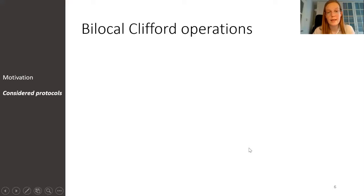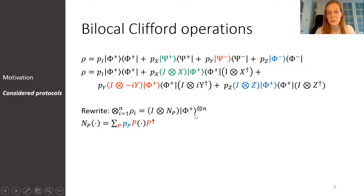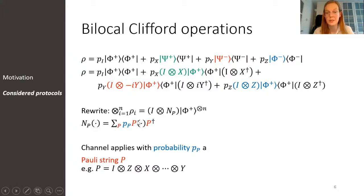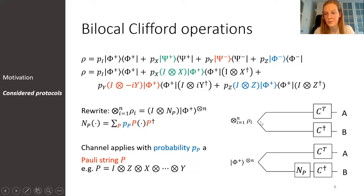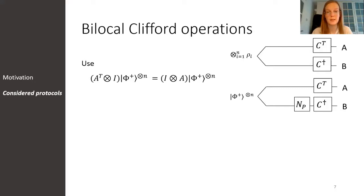Let us look at the effect of these Clifford operations in a bit more detail. First note that we can write any of the four Bell states in terms of the phi-plus state, conjugated with one of the Pauli matrices on Bob's side. As a result, we can rewrite our tensor product of Bell-diagonal states as the n-fold tensor product of the phi-plus state with some additional channel. This channel M_p applies, with probability p, a certain Pauli string to our initial state. So in the form of a circuit, we go from the top representation to the bottom one, where we have the n-fold tensor product of the phi-plus state with an additional channel.